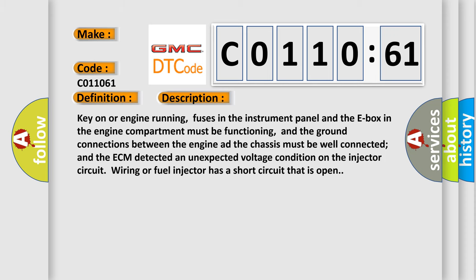Key on or engine running, fuses in the instrument panel and the E-box in the engine compartment must be functioning, and the ground connections between the engine and the chassis must be well connected. The ECM detected an unexpected voltage condition on the injector circuit wiring or fuel injector has a short circuit that is open.